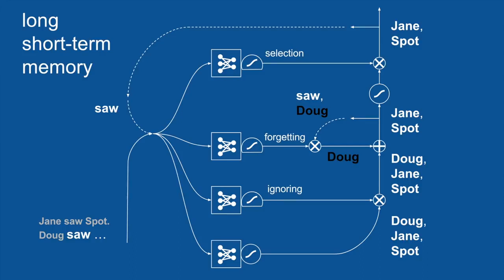Now, to be fair to vanilla recurrent neural networks, they can actually look back several time steps as well, but not very many. LSTM can look back many time steps and has shown that successfully.